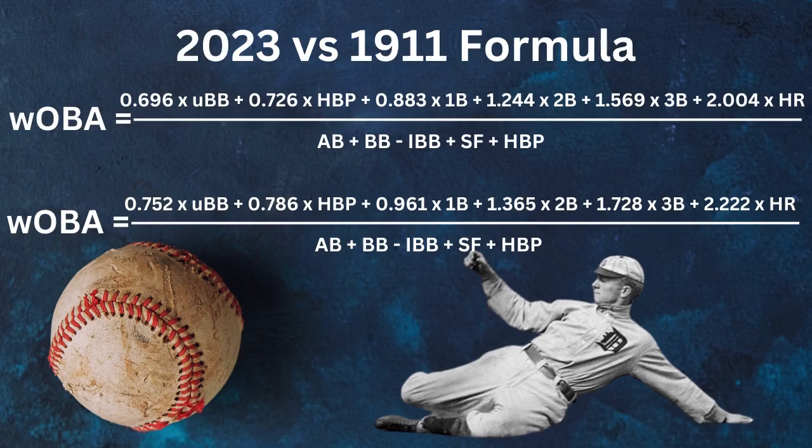We are going to see a difference in the statistics. The coefficients have definitely changed: from around 0.69 for walks up to 0.752; hit-by-pitches jump from 0.72 to 0.786; singles from 0.89 to 0.961; doubles from 1.27 to 1.365; triples from 1.62 to 1.728; and home runs from 2.10 all the way up to 2.222. A really true difference in run scoring environments.